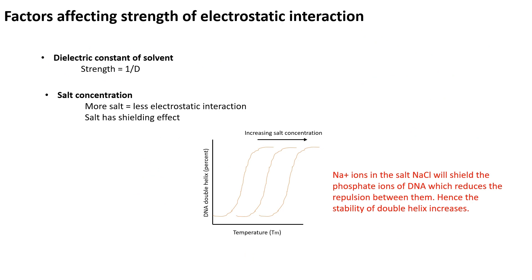What are the factors that affect the strength of electrostatic interaction? First is dielectric constant — since strength is inversely proportional to dielectric constant, as d increases the strength decreases, and if d decreases the strength increases.